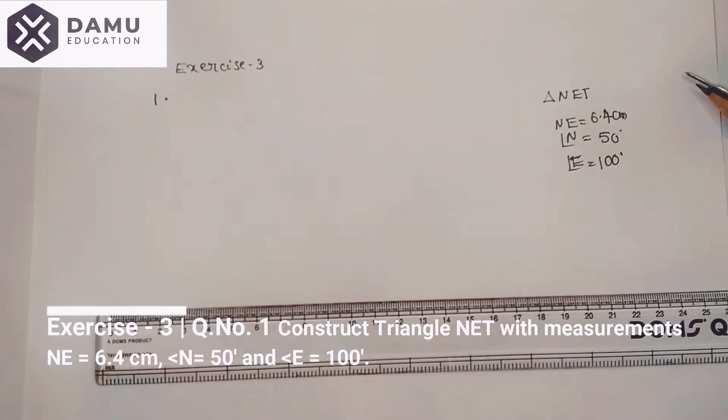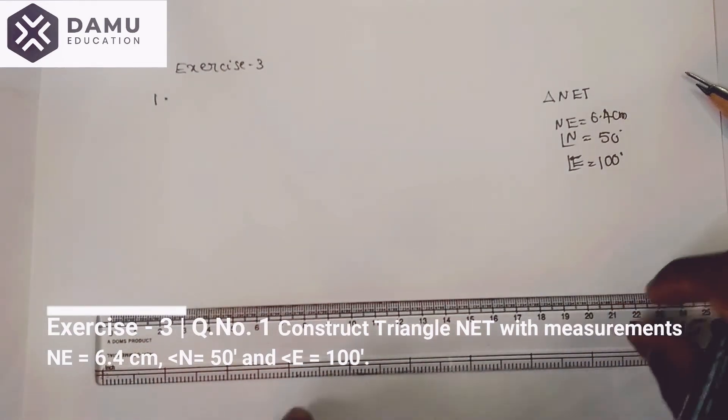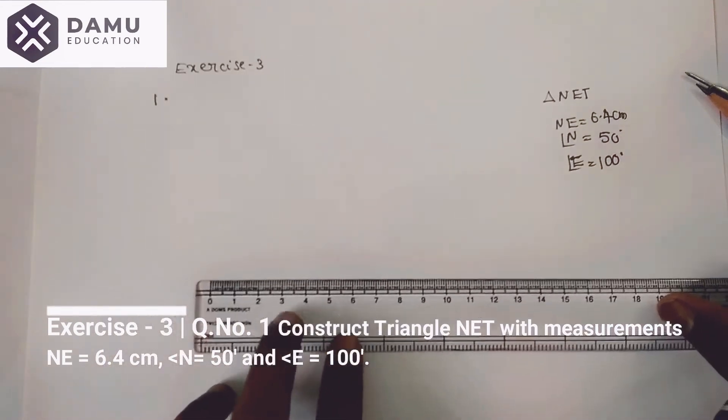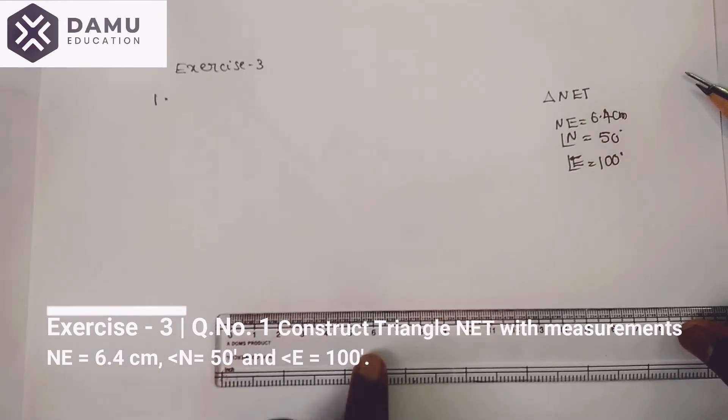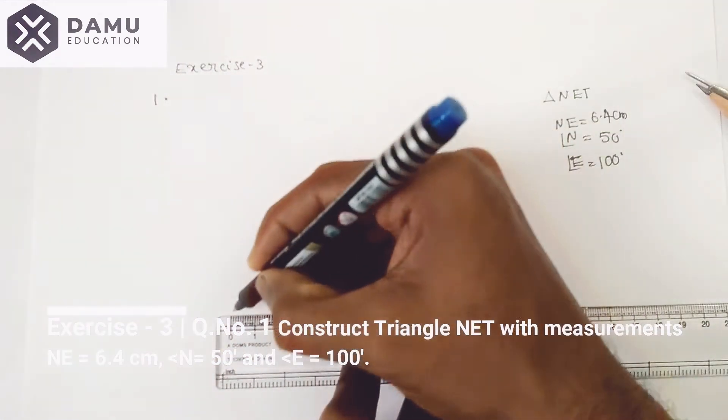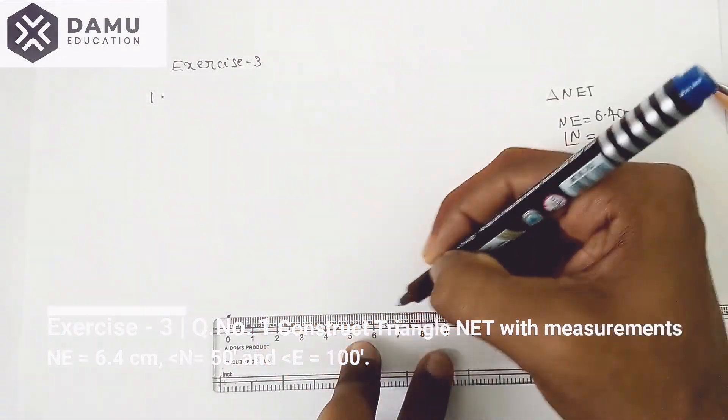First we are going to draw the line segment NE with 6.4 centimeters. Keep your scale horizontally, then draw from 0 to 6.